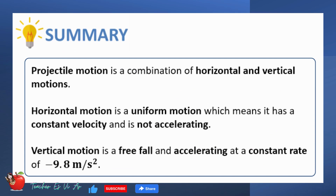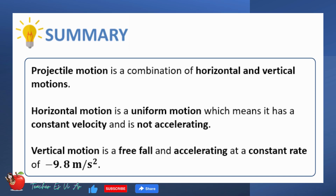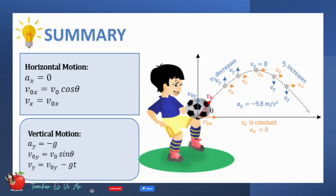In summary, we have learned that projectile motion is a combination of horizontal and vertical motions. Horizontal motion is a uniform motion, which means it has a constant velocity and is not accelerating. On the other hand, vertical motion is a free fall, accelerating at a constant rate of negative 9.8 meters per second squared. Here is a summary of equations describing the vertical and horizontal motions of a projectile.